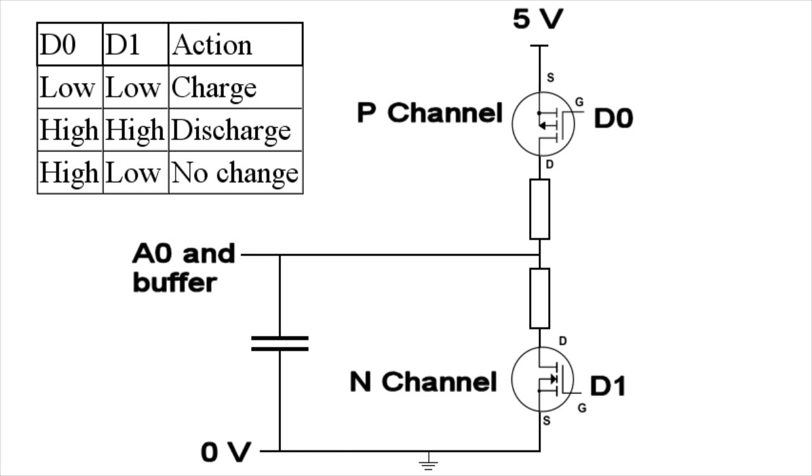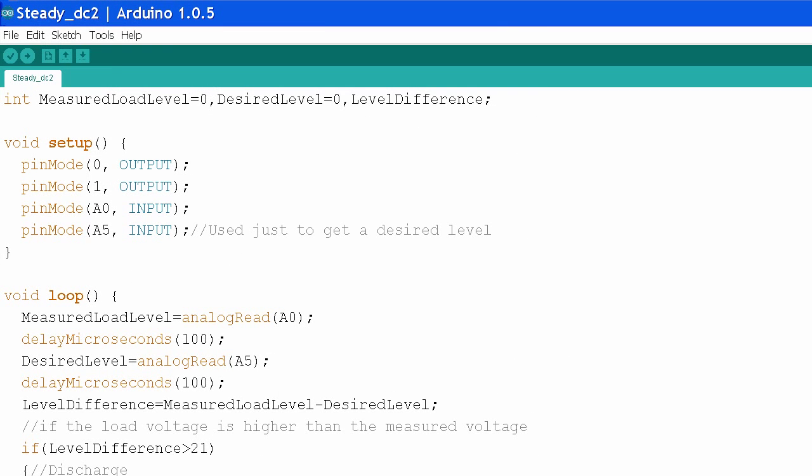When the capacitor's voltage is within a certain range, you can do nothing and with a very high impedance buffer the voltage should barely change. This is the test program I have made. I am still using A5 just to conveniently set a desired level of output. I set up the pins including D1.